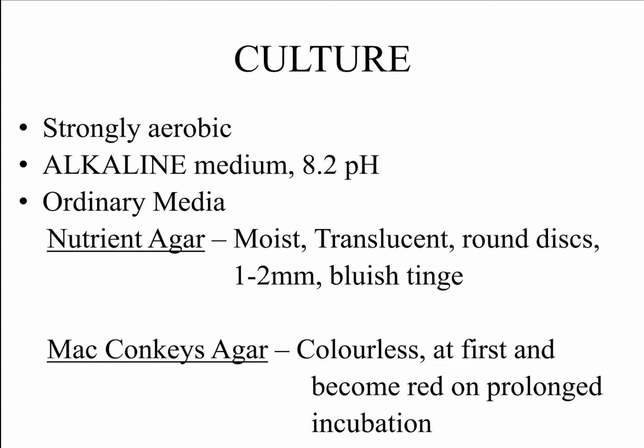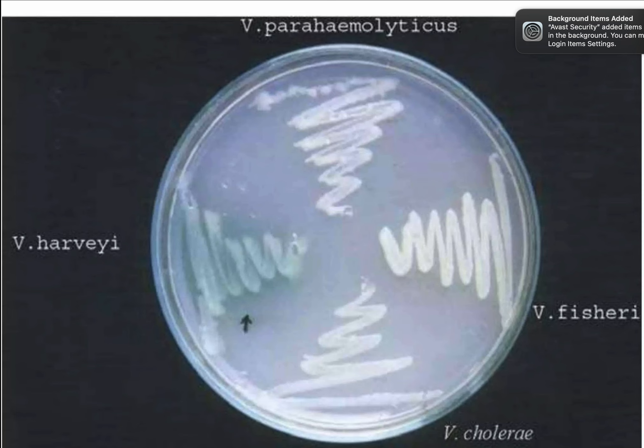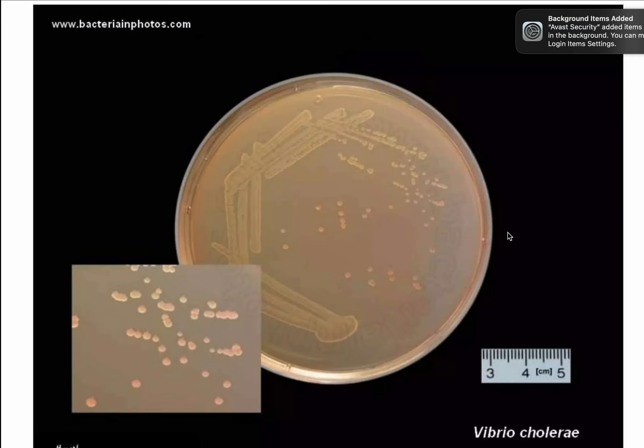Vibrio cholerae is strongly aerobic and grows best in an alkaline medium with a pH of 8.2. On nutrient agar, the colonies appear moist, translucent, round disc with a bluish tinge. On MacConkey agar, colonies are initially colorless but turn red after prolonged incubation. These are the different species of Vibrio grown on nutrient agar medium, and this is how Vibrio cholerae looks when grown on different media.